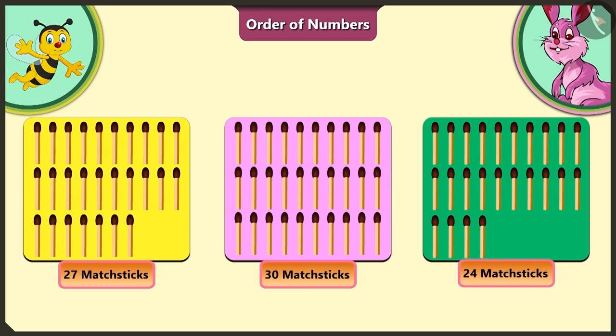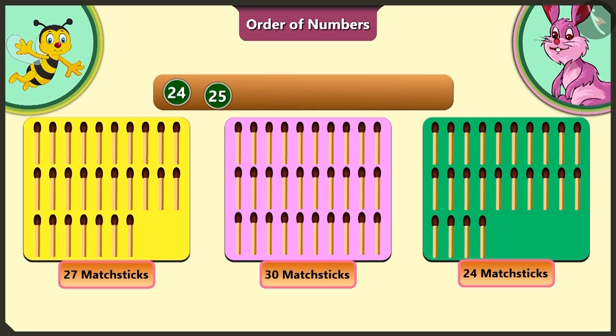So you would have understood that counting in order, we get 24, 25, 26, 27, 28, 29 and 30.